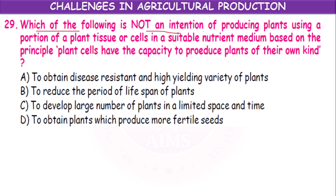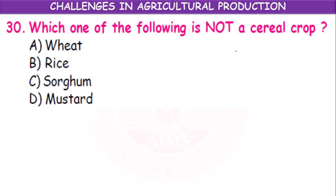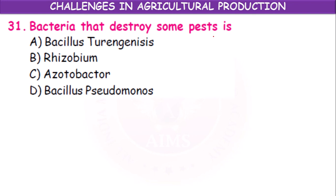Which of the following is not an intention of producing plants using plant tissue or cells in a suitable nutrient medium based on the principle that plant cells have the capacity to produce plants of their own kind? Options: to obtain disease-resistant and high-yielding varieties; to reduce the period of lifespan of plants; to develop a large number of plants in limited space and time; to obtain plants which produce more fertile seeds. The answer is: to reduce the period of lifespan of plants. Which one is not a cereal crop? Wheat, rice, sorghum, mustard — sorghum is not a cereal crop. The bacterium that destroys some pests is Bacillus thuringiensis.